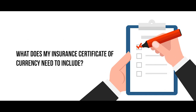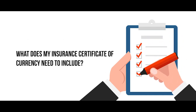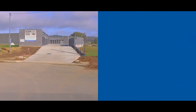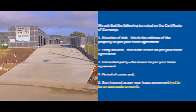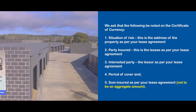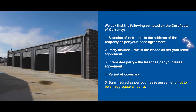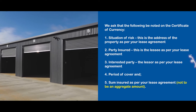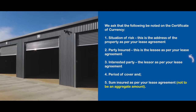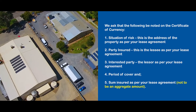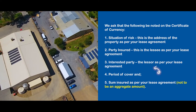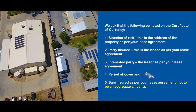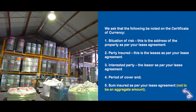What does my insurance certificate of currency need to include? We ask that the following be noted on the certificate of currency: situation of risk — this is the address of the property as per your lease agreement; party insured — this is the lessee as per your lease agreement; interested party — the lessor as per your lease agreement; and period of cover and sum insured as per your lease agreement.